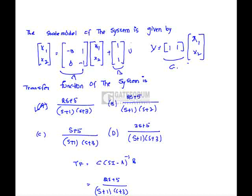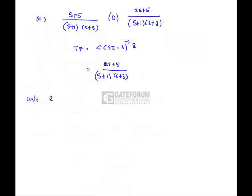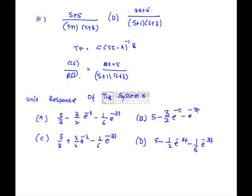Now we have to find out the unit step response of this particular system. C of s by R of s is the transfer function. For unit step response, R of s equals 1 by s, so C of s is 2s plus 5 divided by s times (s plus 1) times (s plus 3).